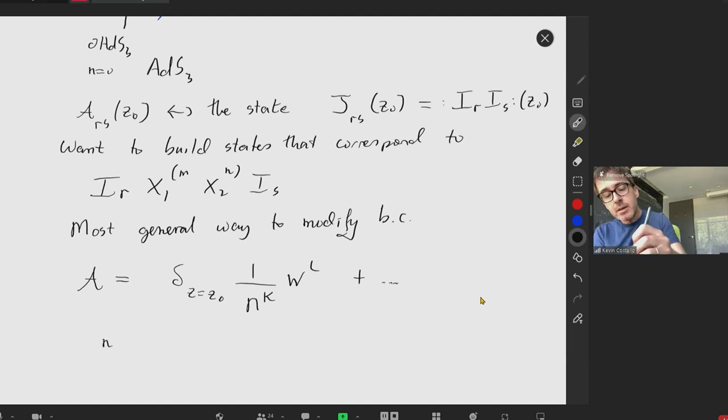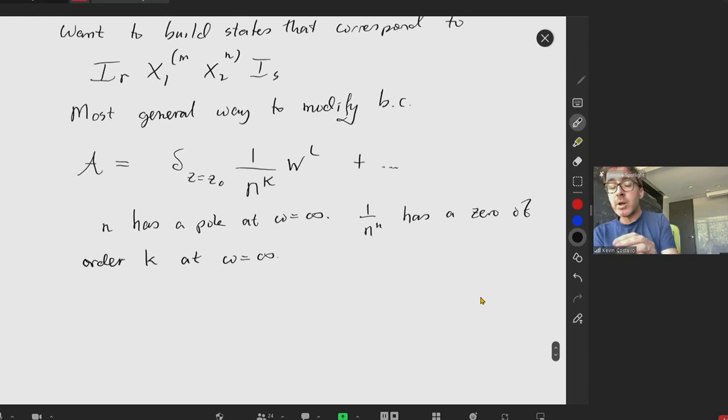Now, what possible values do we have here for these indices? Well, I can have an arbitrary pole in N. But we know that N has a pole at w equals infinity. Which means 1 over N to the k has a zero of order k. Having a pole in the w plane would be bad, because it would prevent my field configuration from satisfying the equations of motion. So we need that the index L ranges from zero to k.